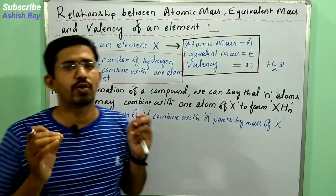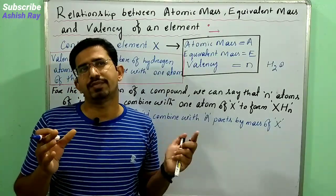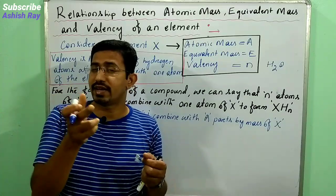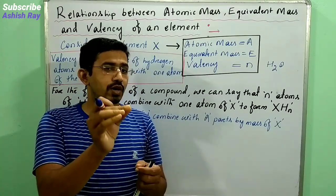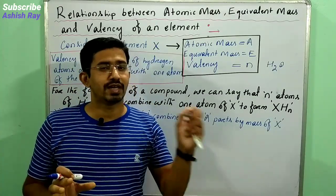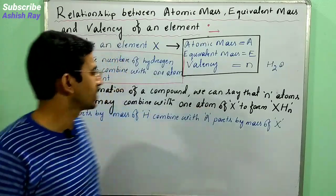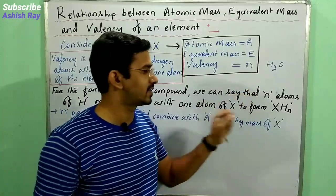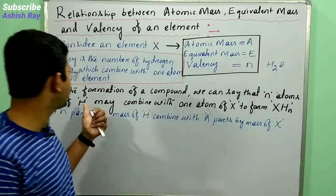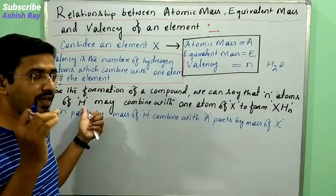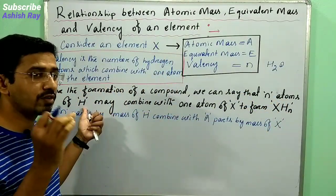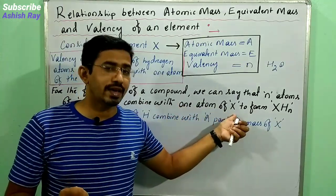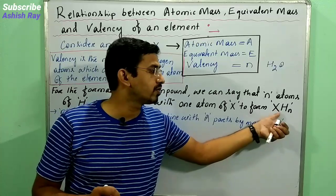So if you are planning to form a compound, we have to take N number of hydrogen atoms, and that N number of hydrogen atoms should combine with one atom of that particular element. So for the formation of the compound, N atoms of hydrogen combine with one atom of X to form the compound.